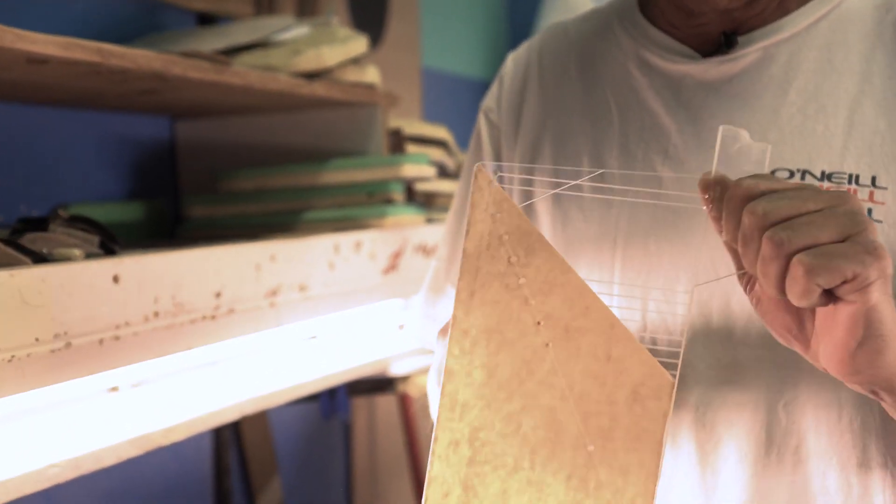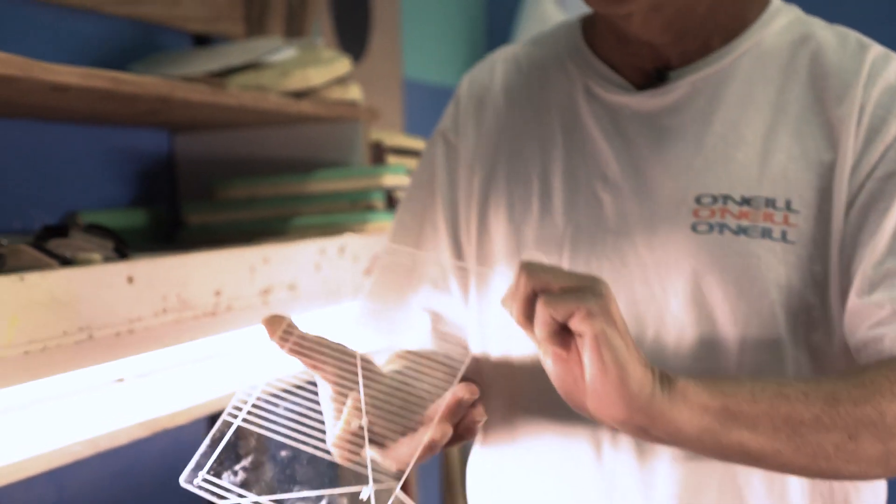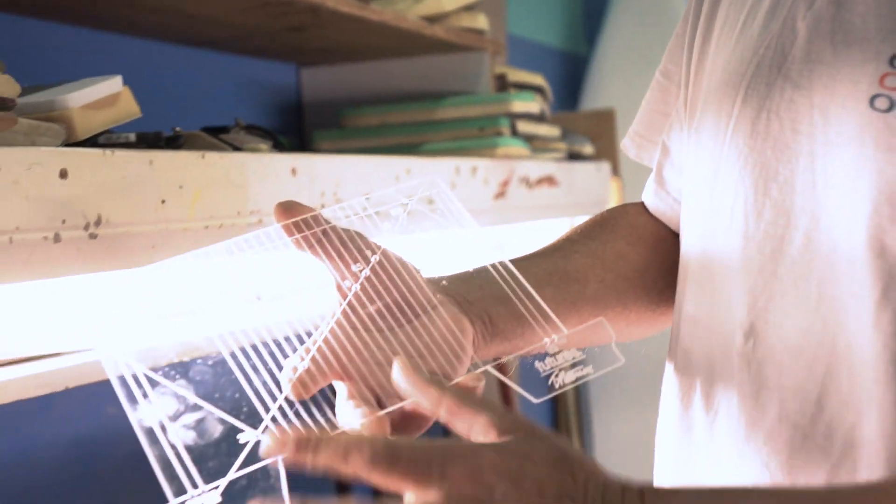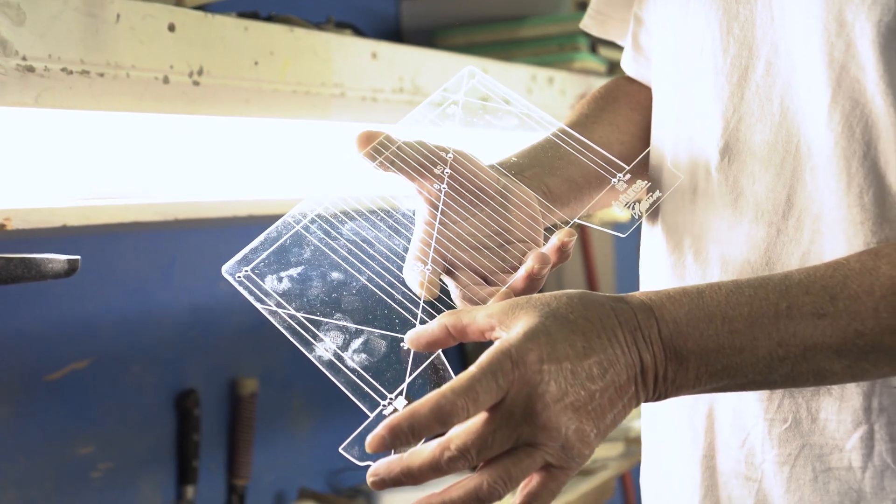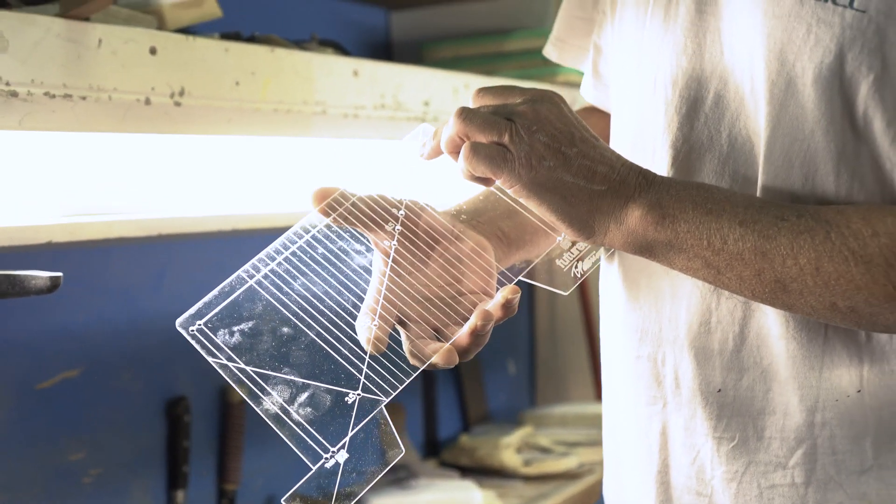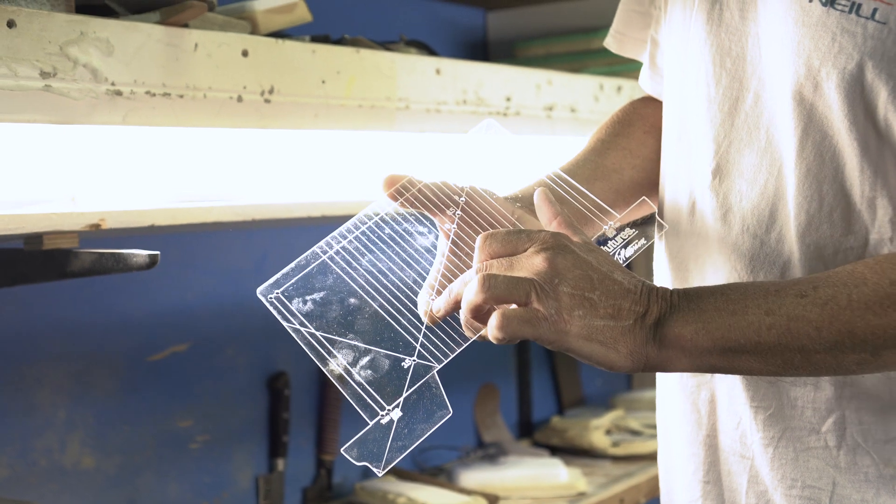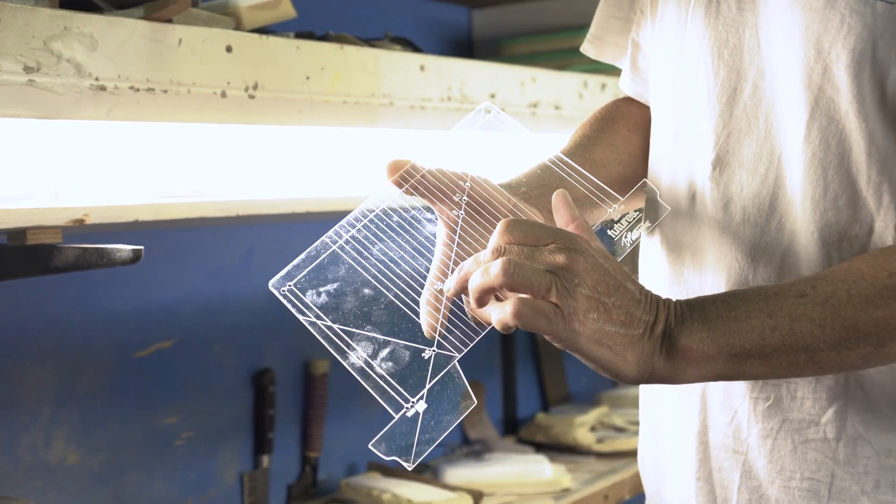Peel this off real quick. It's kind of nice how they got it scribed. We got your basic measurements. I do a three and a half and 11, and we got multi other numbers. This is for my five fin setup.